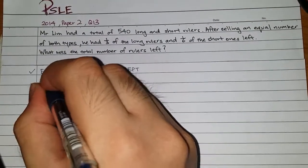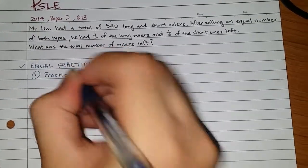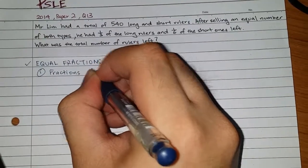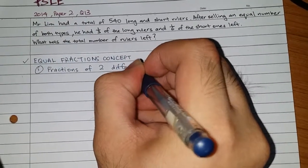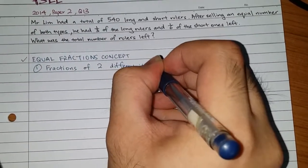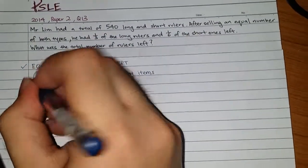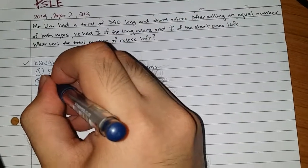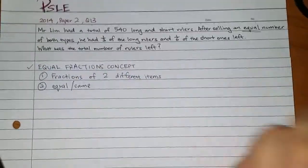First I need to have fractions of two different items or person or whatsoever. And the second thing is the most important is the keyword equal or the word same.